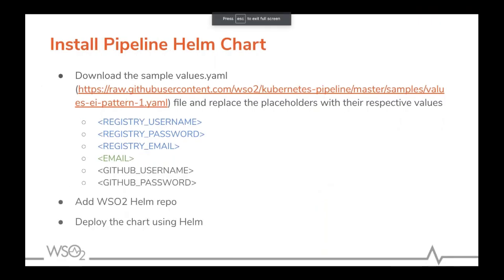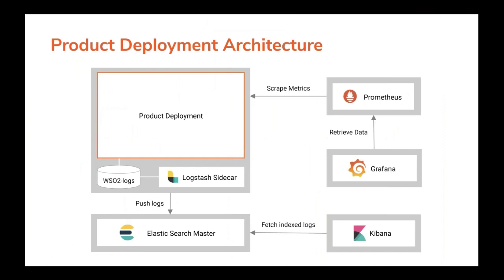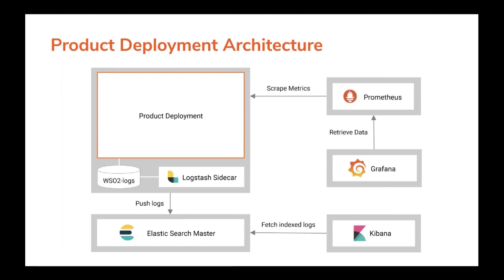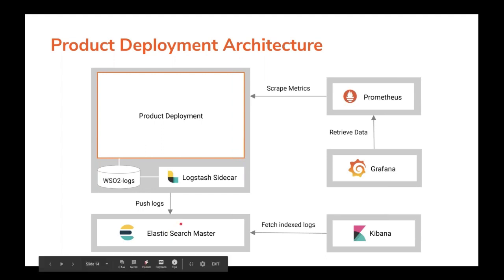Moving back to the presentation, let's discuss how product deployments are deployed. Each product deployment is bundled with a Logstash sidecar container which shares the logs folder with the actual product. Whenever Logstash sees a new line added to a log file, it pushes the logs to the cluster-wide Elasticsearch master. The Elasticsearch master indexes all the logs it receives from all deployments, and as shown earlier, you can use Kibana to fetch these indexed logs by creating an index pattern to view logs for the entire cluster in one place.